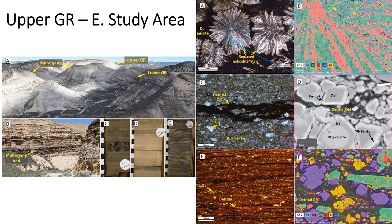Authigenic feldspars — analcite and albite especially — are very common as well. Here they're shown floating in organic matter. Note that both K-spars in yellow and albites — sodium feldspars — are present. This image has a lot of organic matter; a lot of these rocks are actually sapropels that have more organic matter than mineral content.